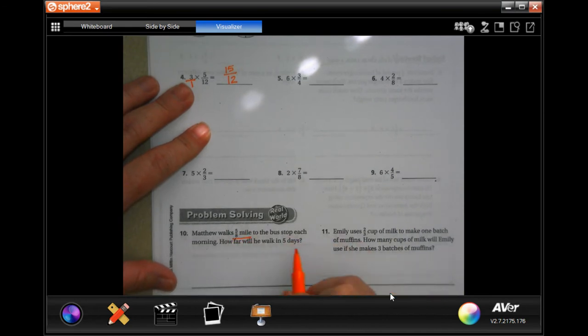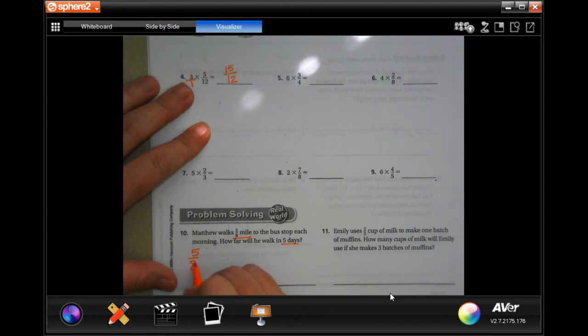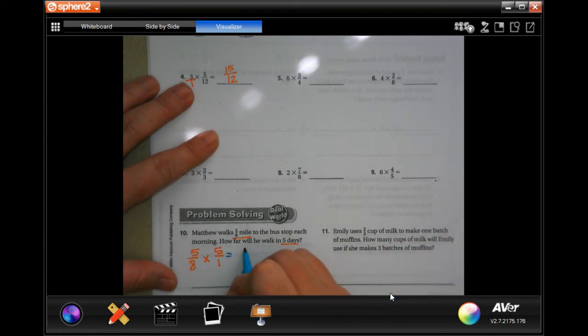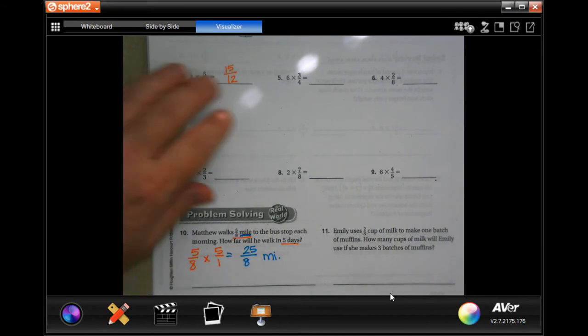Matthew walks five-eighths of a mile to the bus stop each morning. How far will he walk in five days? So we have five-eighths times five, and I'm going to put that five over one. So, five times five, twenty-five. Eight times one, eight, and we're just going to put miles after it because it's being measured in miles.